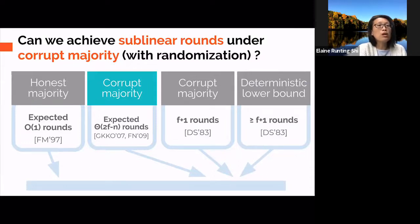For almost all parameter regimes, their result is in linear land rather than in sublinear land. For example, even when only 51% of the players are corrupt, their protocol would still suffer from linear round complexity.